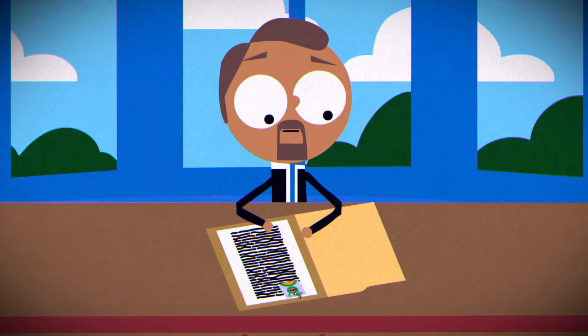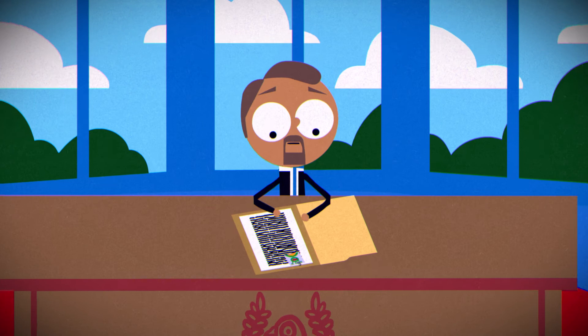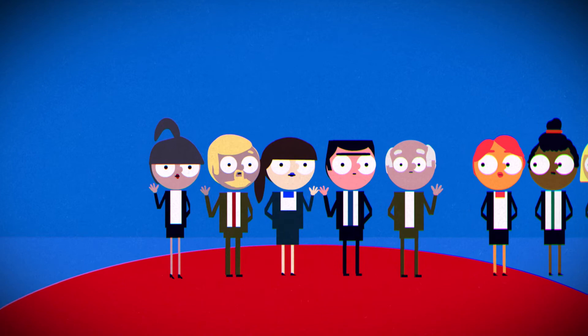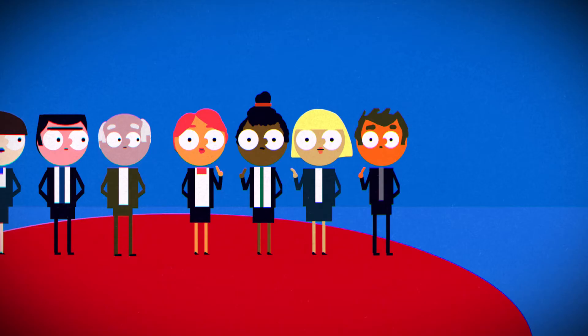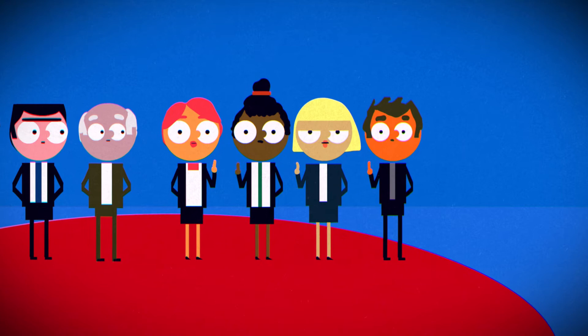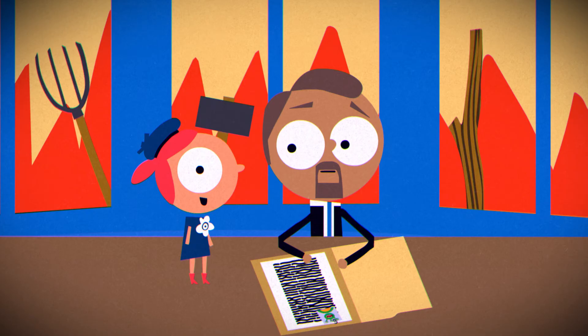The new president shares the secret with their nine closest advisors to get their opinion. Five advisors think the information should be shared because the people have the right to know. The other four advisors insist that the secret should remain a secret to prevent chaos.